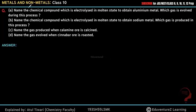Hello everyone. Question 1: Name the chemical compound which is electrolyzed in molten state to obtain aluminum metal. Which gas is evolved during the process? Question 2: Name the chemical compound which is electrolyzed in molten state to obtain sodium metal. Which gas is produced in the process?